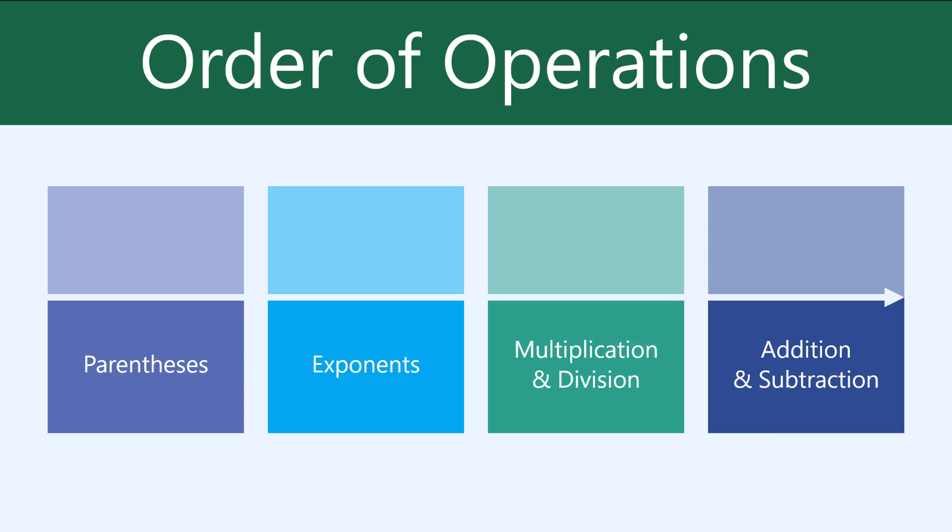Google Sheets uses a set of rules called the order of operations, which you might remember from math class. The order of operations determines which parts of the formula to calculate first. The very first thing that you calculate are the items in parentheses.